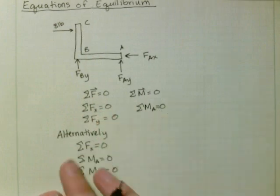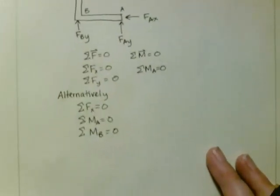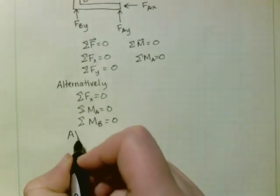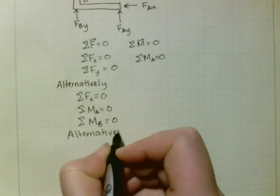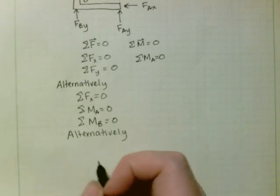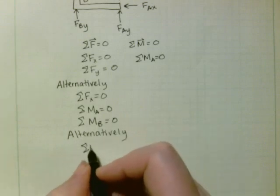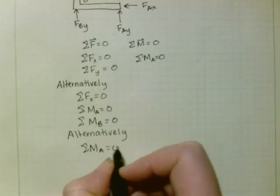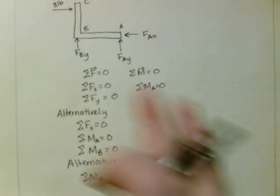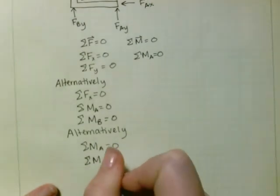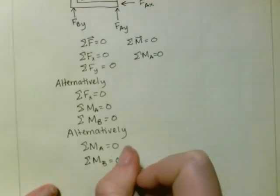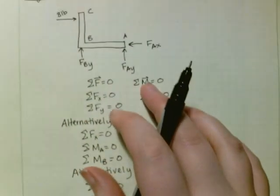Okay? So we could use those 3 equations to solve it. And then finally, alternatively, we could use that the sum of the moments about A is equal to 0. That's going to give us Fby. Then we could say the sum of the moments about B is equal to 0. That would give us Fay.